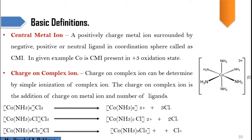To determine the charge on the complex ion, we do the ionization and the charge we obtain — here plus 3 — is the total charge on the complex ion. In another example, monochloropentaamine cobalt chloride, ionization gives the monochloropentaamine cobalt di-positive complex plus 2 chloride ions. Why only 2 chloride? Because one Cl is present inside the coordination sphere and does not undergo ionization — only species outside the coordination sphere undergo ionization.